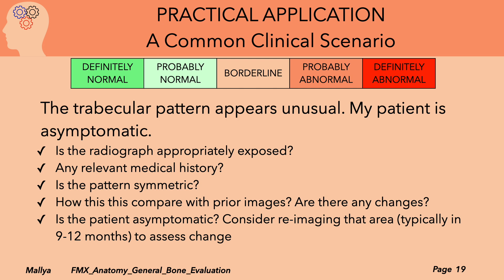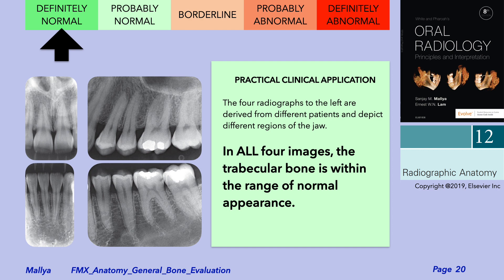Finally, one option given that the patient is asymptomatic is to consider re-imaging that area, typically in about 9 to 12 months, to assess any change. If the appearance is relatively stable over that time period, it is more likely to be an anatomic variation. To be competent in radiological interpretation, you should have a strong appreciation of the range of normal appearances of trabecular patterns.